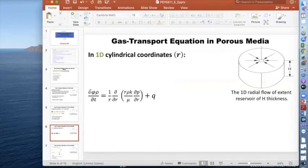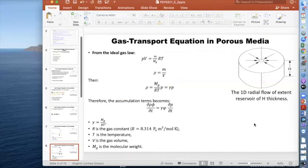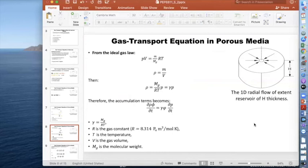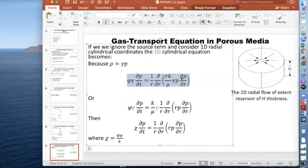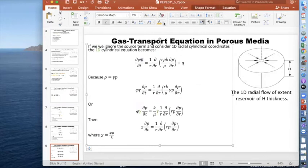We can now write our accumulation term, the time-dependent term, in this form. We'll replace this new definition of rho with gamma p on the right-hand side and in the left-hand side as well.